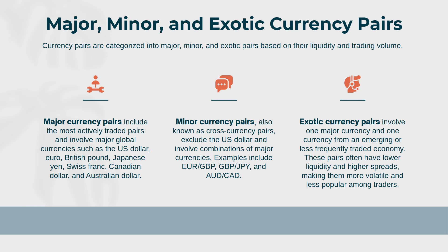Major, minor, and exotic currency pairs: currency pairs are categorized into major, minor, and exotic pairs based on their liquidity and trading volume. Major currency pairs include the most actively traded pairs involving major global currencies such as the U.S. dollar, euro, British pound, Japanese yen, Swiss franc, Canadian dollar, and Australian dollar. Minor currency pairs, also known as cross currency pairs, exclude the USD and involve combinations of major currencies — examples include EUR/GBP, GBP/JPY, and AUD/CAD. Exotic currency pairs involve one major currency and one currency from an emerging or less frequently traded economy, often having lower liquidity and higher spreads, making them more volatile and less popular among traders.